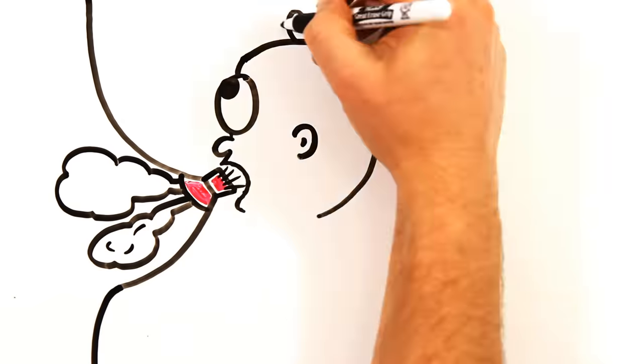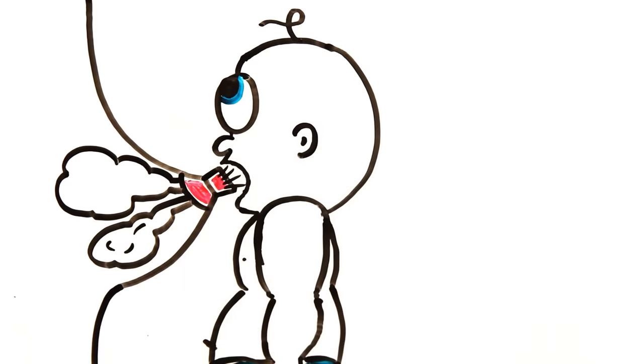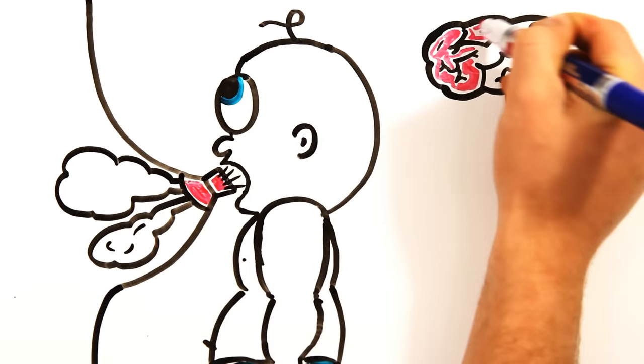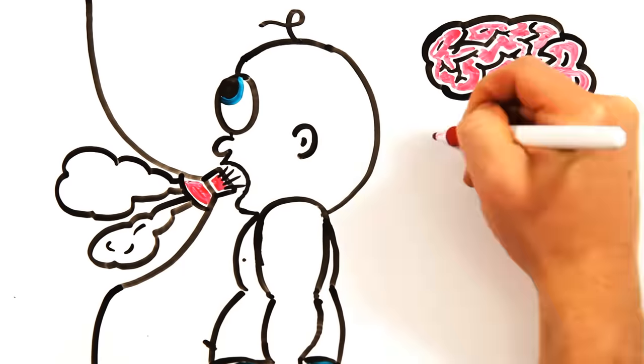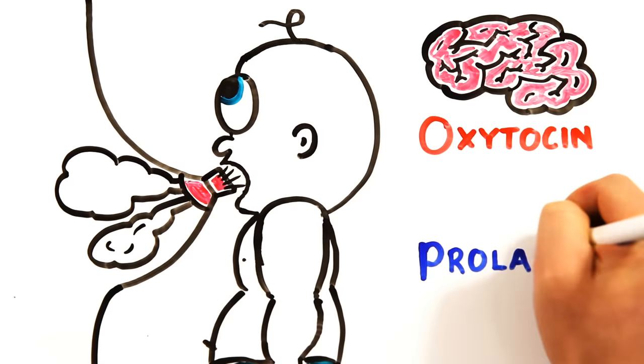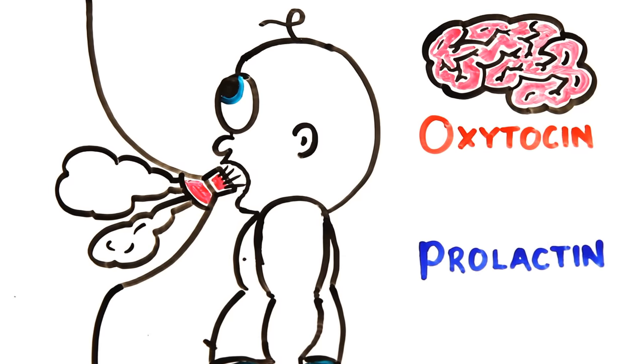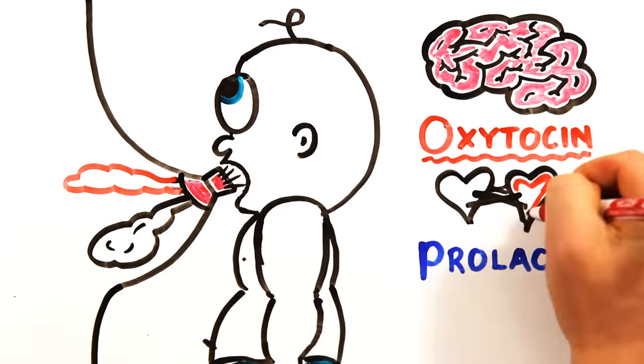After having a baby, receptors in the nipple detect when the baby begins to suckle, sending messages to the mother's brain, causing a release of oxytocin and continued production of prolactin. Oxytocin causes the cells that line the mammary glands to contract, and is also known as the cuddle hormone as it enhances the bonding experience between mother and child.